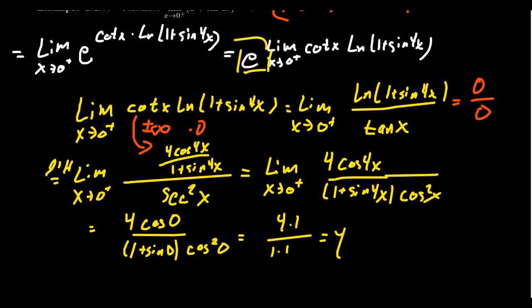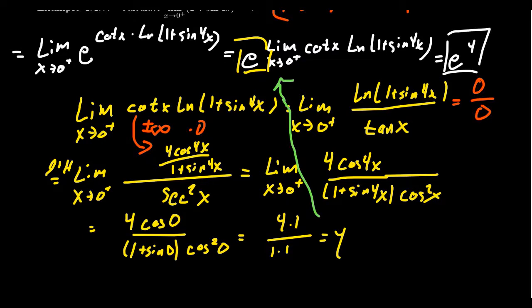We might get so excited that we computed the limit, but the answer is not 4. We have to go back and remember that we pulled out the exponential e at the start. So the limit is e to the 4, that is, e to the 4th. That's the correct limit. This is honestly the most dangerous part of these exponential indeterminate forms — we have to remember the final answer is e raised to whatever number we computed. Don't forget the natural exponential.